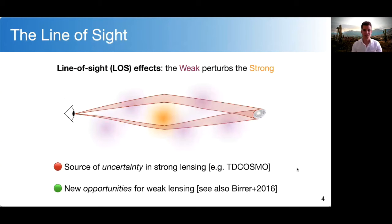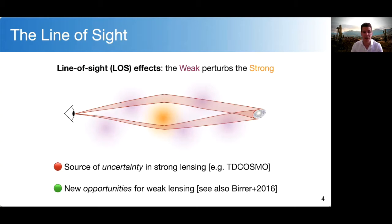The third protagonist of my presentation is the line of sight. To put things simply, line-of-sight effects are the weak lensing perturbations to strong lensing. This is known to be a key source of uncertainty in the modeling of strong lenses and is particularly critical for time-delay cosmography measurements of H₀. But it could also be used as a new opportunity for novel measurements of weak lensing, and this is what I'm going to argue in the rest of this presentation.